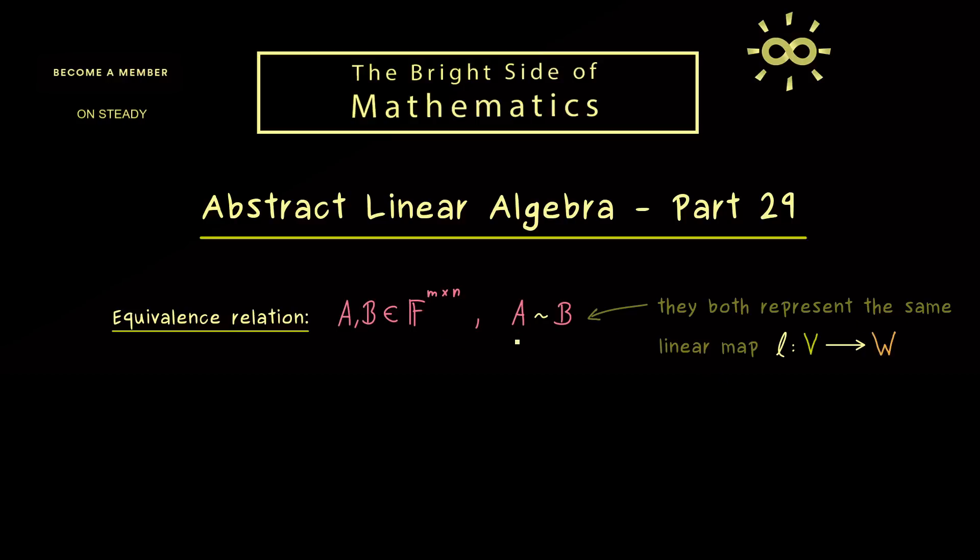So again equivalence means that both matrices can act as matrix representations for the linear map, just with respect to different bases of V and W. And moreover, we have also learned that we can describe this property without using the linear map at all.